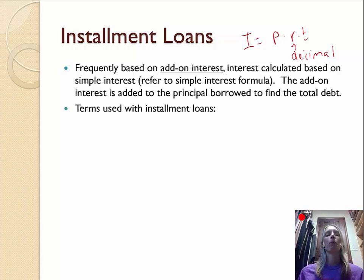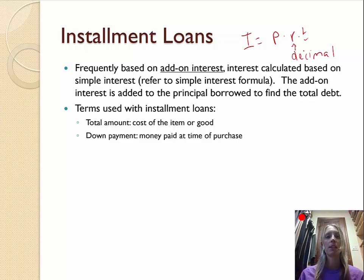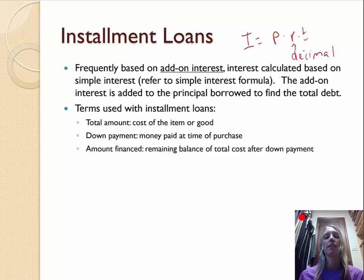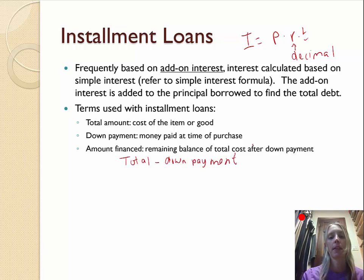Here are some terms that we're going to see in the examples. First we have the total amount. That would be the cost, the entire cost of the item or good. The down payment. So usually when an installment loan is involved, you have to at least put some money down. So if something costs $10,000, maybe you put down $2,000. That would be the down payment. That's the money paid at the time of the purchase. The rest of it is called the amount financed. So the remaining balance from the total amount after the down payment would be the amount financed. We would calculate that by doing the total amount subtracted by the down payment.